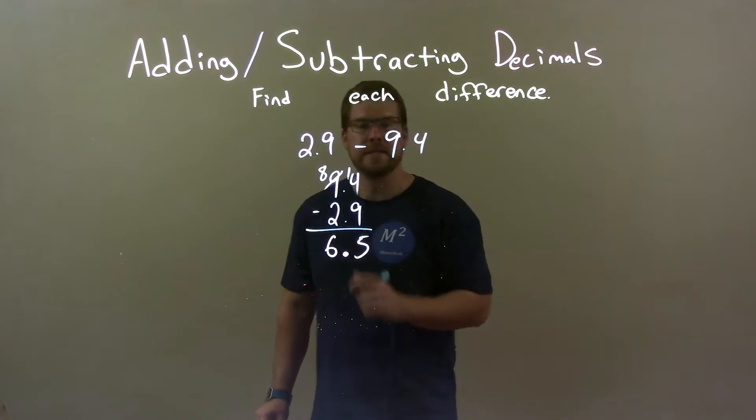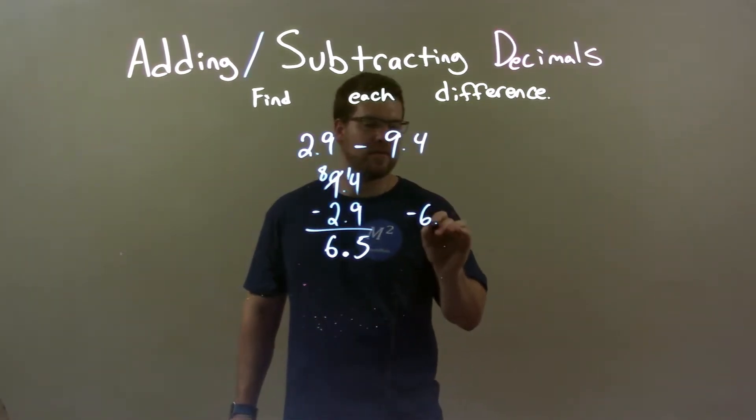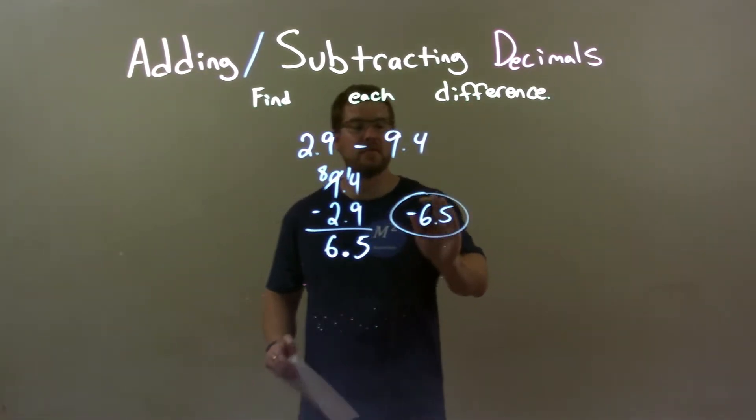Now, be careful, we're not done. We knew our final answer had to be negative, so we're going to put a negative with a 6. So, it's negative 6.5 right there. So, here we have our final answer, negative 6.5.